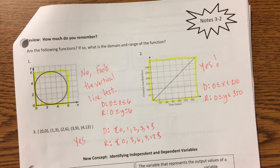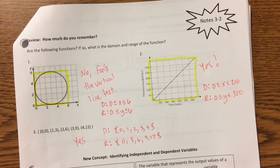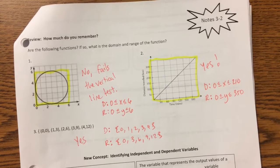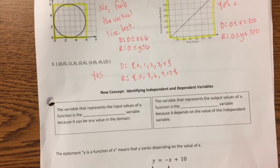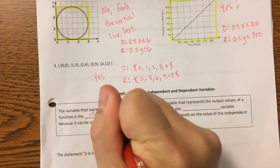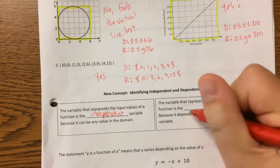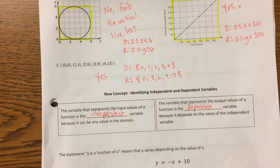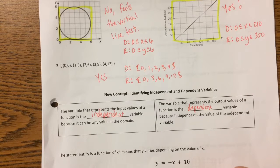From now on I'm going to start writing domain and range as just D and R. Let's go back to what we were talking about in the introduction: independent and dependent variables. The independent variable represents your input — they both start with 'in.' The variable that represents the input values is the independent variable. The one that represents the outputs is the dependent variable. The independent variable is typically your x, and your dependent variable is typically y.